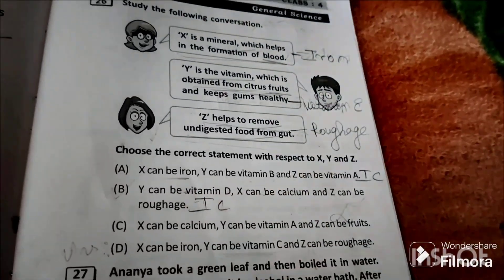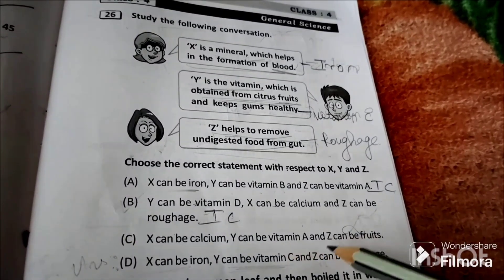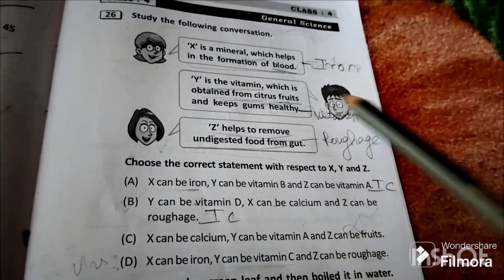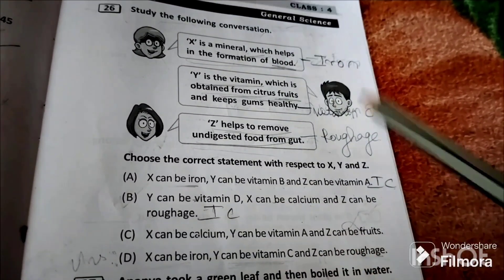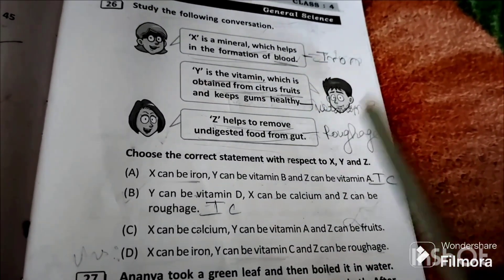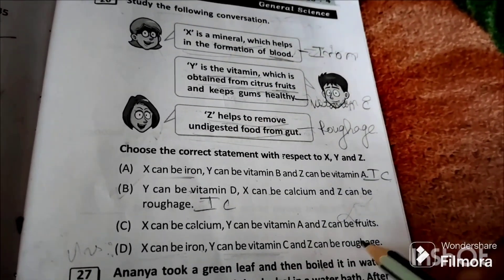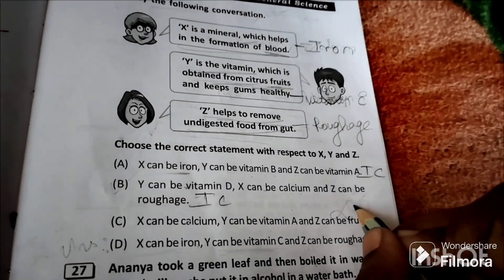Option C: X can be calcium, Y can be vitamin A. Z can be vitamin A is wrong because Y is vitamin C, and Z can be fruits is wrong because Z is roughage. So this statement is also incorrect.